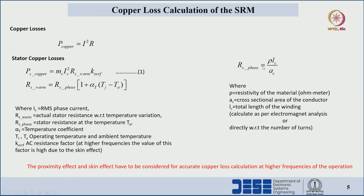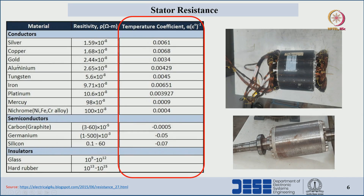This resistance is calculated at ambient temperature. If temperature varies due to losses or operating conditions, we have to recalculate the copper loss accordingly. Here MS represents the number of phases conducting at one particular instant, or the total number of phases. Resistivity values for aluminum, copper, and some insulating materials are shown here.